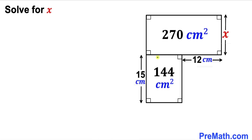Welcome to Premath. In this video we have these two rectangles such that the area of the big rectangle is 270 centimeters square and the area of the other rectangle is 144 centimeters square. The dimensions given are 15 centimeters and 12 centimeters, as shown in the diagram, and we are going to find the value of the side length x.